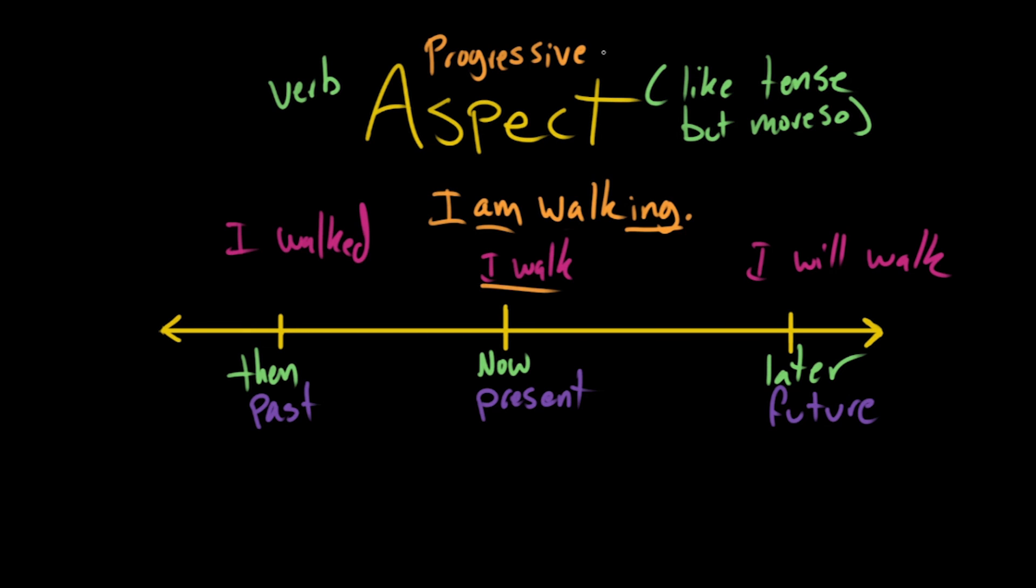And its effect is to say that something is ongoing. This is also called the continuous aspect, but I like to call it the progressive aspect. Let's try this in all the different basic conjugations. So we call this the present progressive.